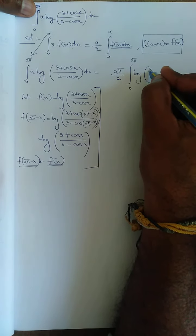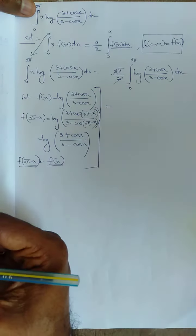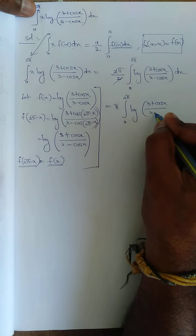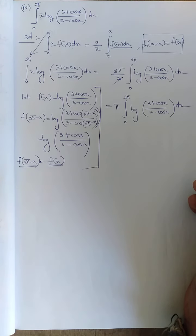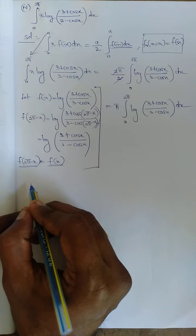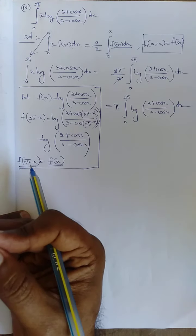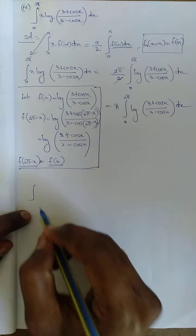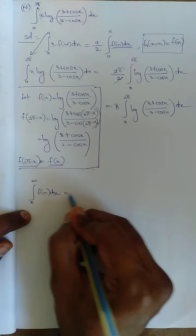So we get π·∫₀²π log[(3+cosx)/(3-cosx)] dx. The x is removed. That is the result from the first property. Next, I am going to use another property: ∫₀²ᵃ f(x) dx equals either 0 or 2·∫₀ᵃ f(x) dx, depending on a condition.